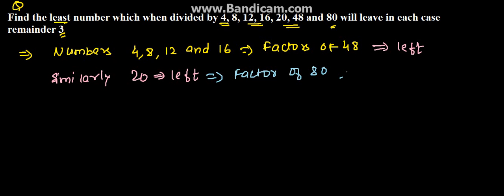So the remaining numbers are 48 and 80. The LCM of these two numbers would be the LCM of all these numbers because they are factors of these numbers.